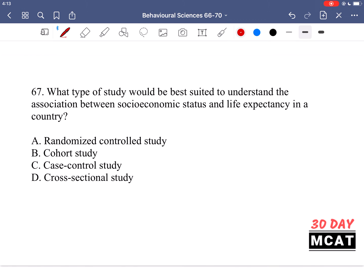In question 67, it says, what type of study would be best suited to understand the association between socioeconomic status and life expectancy in a country? So we want a type of study, and we want to look at the association between socioeconomic status and life expectancy. So let's go through each of these studies one by one.